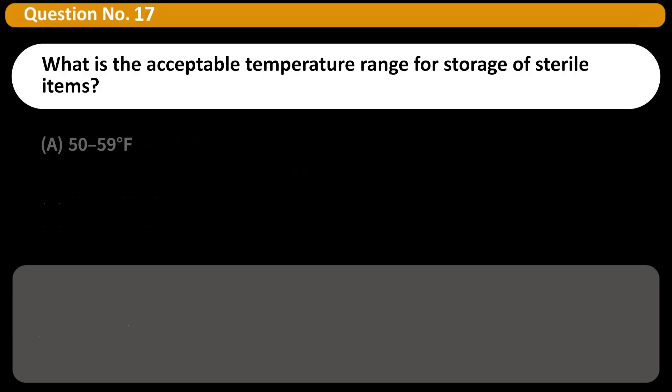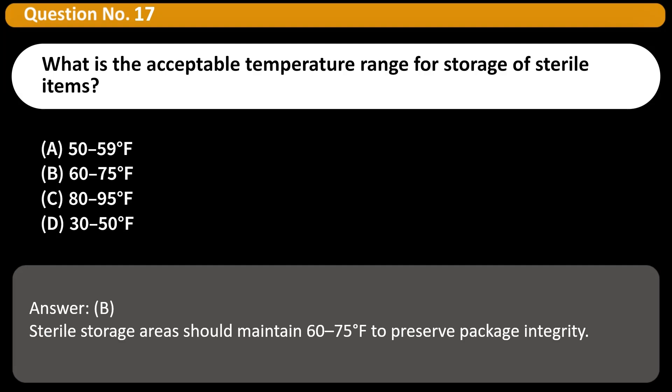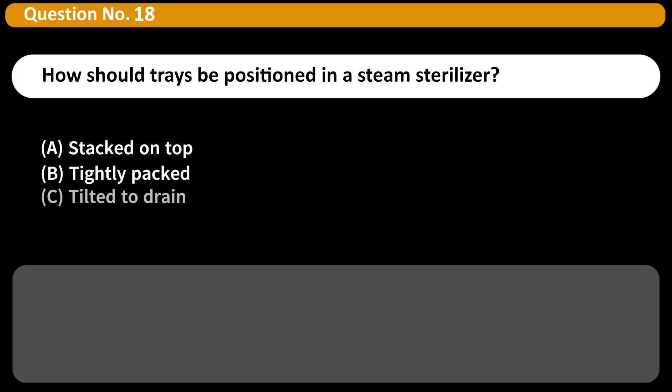What is the acceptable temperature range for storage of sterile items? A. 50 to 59 degrees Fahrenheit, B. 60 to 75 degrees Fahrenheit, C. 80 to 95 degrees Fahrenheit, D. 30 to 50 degrees Fahrenheit. Answer B. Sterile storage areas should maintain 60 to 75 degrees Fahrenheit to preserve package integrity.